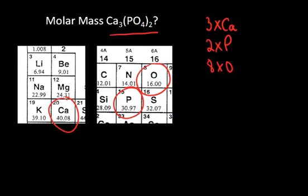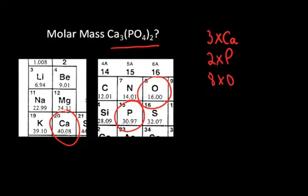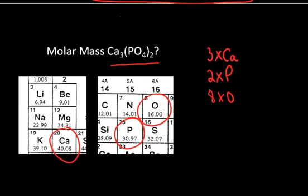How did I know that? Well, if I look at this formula unit, I know that what I really have going on here is a calcium, another calcium, and another calcium, and a phosphate, and a phosphate, all connected together in a compound. And so, I can see there's three calcium, there's two phosphorus, but for each of the phosphates, there's four oxygens. That's how I got my eight.